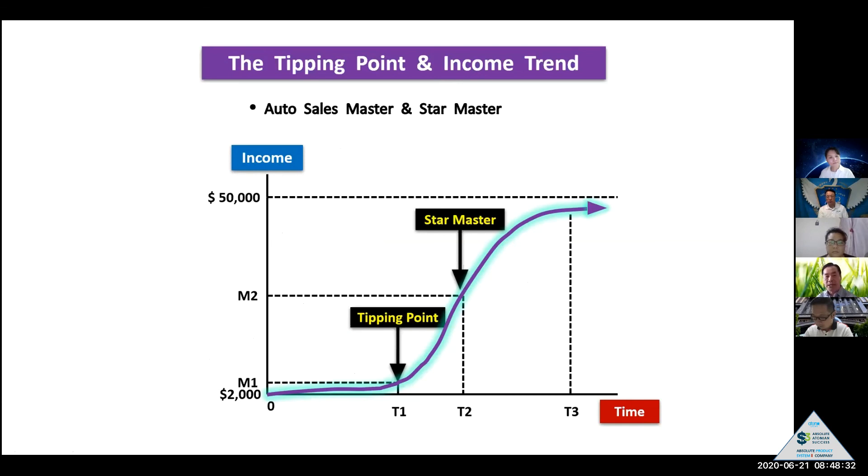But they do not know what it is in business. This is not labor income, this is not temporary income. This pipeline income take a long time. So once you match your tipping point to auto sales master, your business is gradually increasing, increase that in star master.